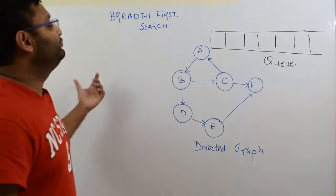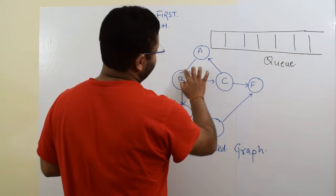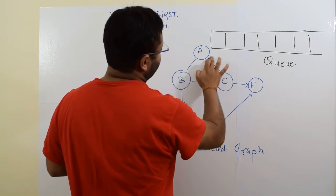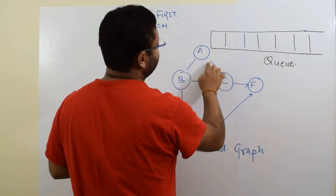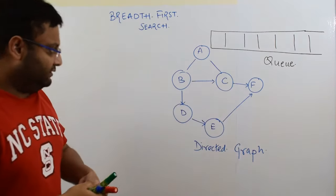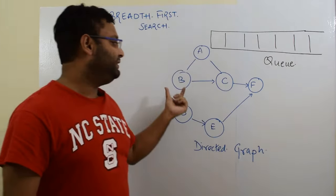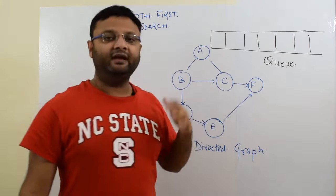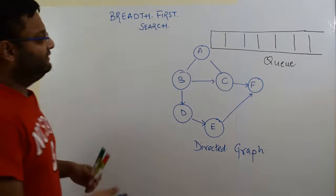So earlier, what you used to do? For example, in case of an undirected graph, when we push A into the queue and take it out, you would say that B and C are the neighbors of A and you pushed B and C into the queue. But now this will not be the case.